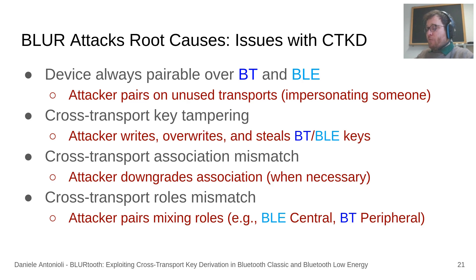The BLUR attack root causes relate to four issues identified in CTKD. First, CTKD results in devices always being pairable over BT and BLE, allowing an attacker to pair on the currently unused transport. Second, CTKD enables cross-transport key tampering — an attacker targeting one transport can write, overwrite, and steal security keys from the other transport. Third, CTKD does not enforce association across transports, so an attacker can downgrade association on one transport while the other expects a stronger method. Similarly, CTKD does not enforce roles across transports, allowing the attacker to mix BT and BLE roles during pairing.